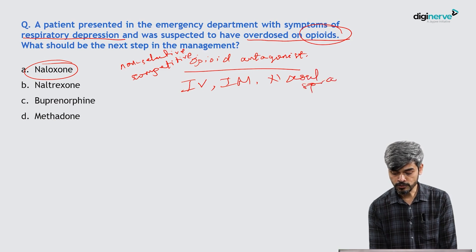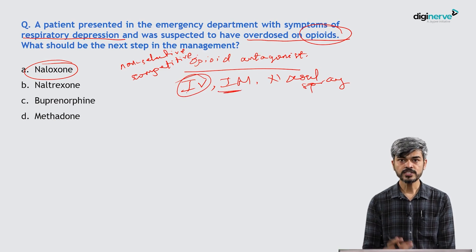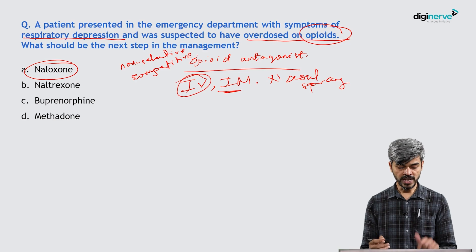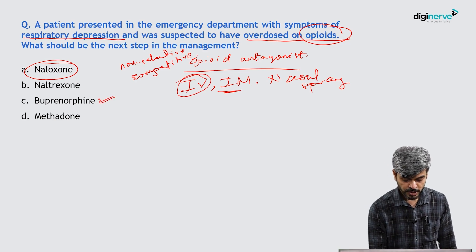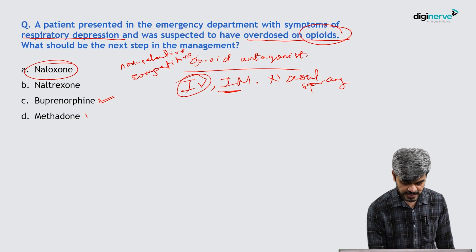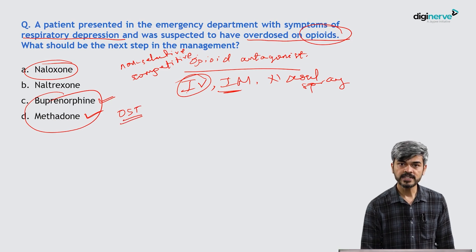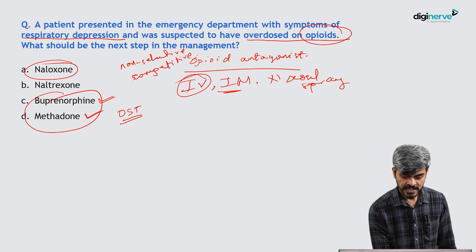Naloxone works very quickly within a few minutes if given IV or IM. It comes as a preloaded syringe. Buprenorphine is a partial agonist and Methadone is an opioid agonist — these are used in opioid substitution therapy (OST) for relapse prevention.